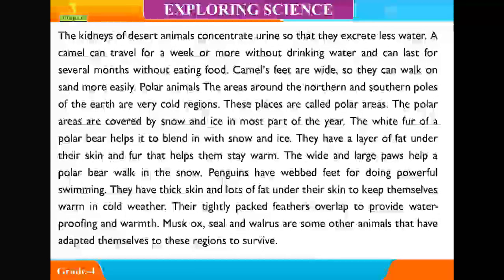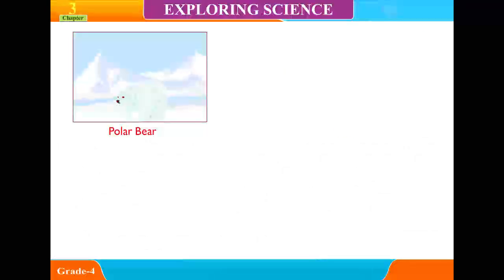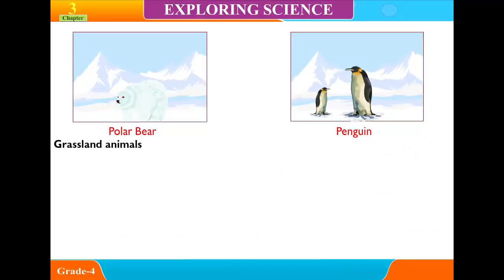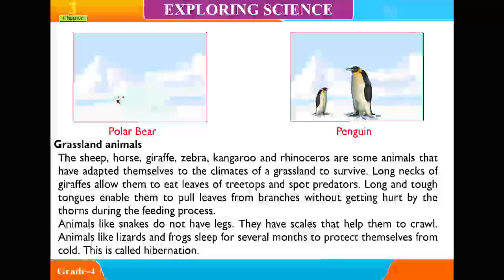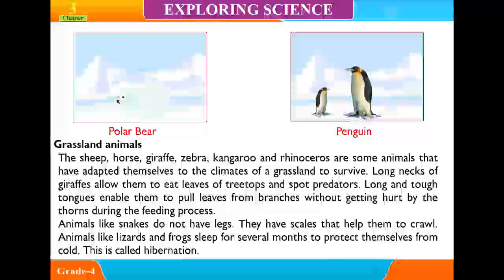Musk oxen, seals, and walruses are some other animals that have adapted themselves to polar regions to survive. Long necks of giraffes allow them to eat leaves from treetops and spot predators. Long and tough tongues enable them to pull leaves from branches without getting hurt by thorns. Animals like snakes do not have legs; they have scales that help them to crawl. Animals like lizards and frogs sleep for several months to protect themselves from cold — this is called hibernation.